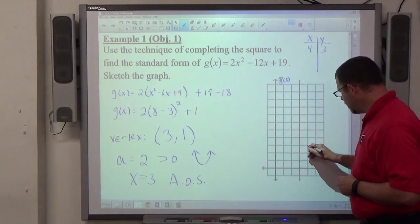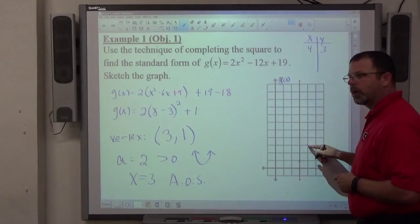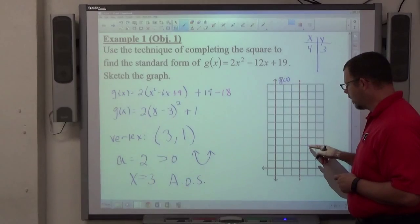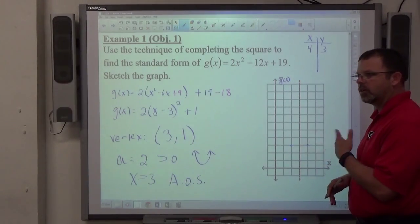So 4, 3 is a point. And that's one space away from the axis of symmetry to the right. So one space away to the left is also going to be a positive 3. That's how you can do it.